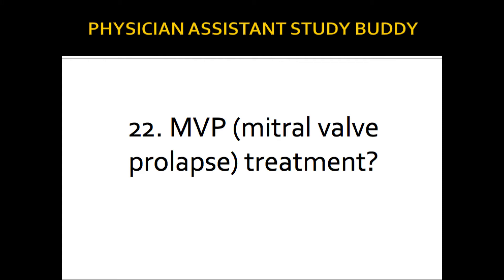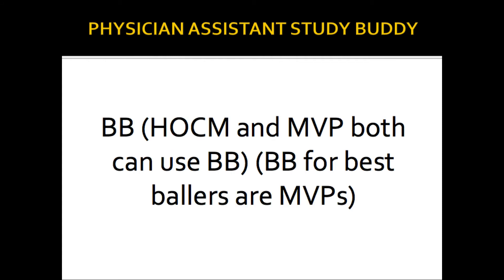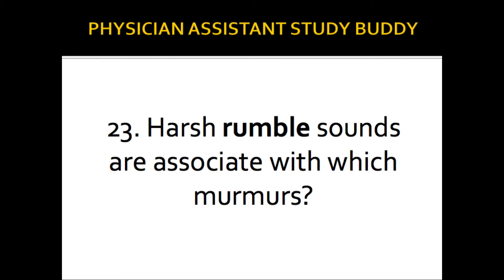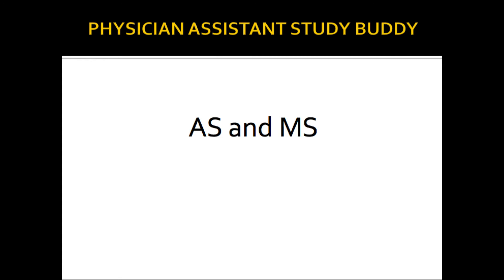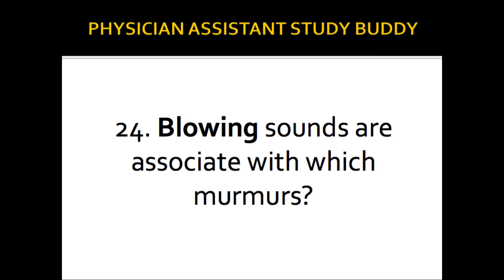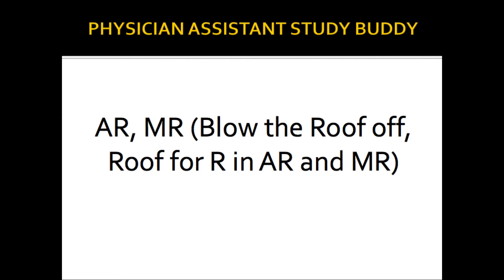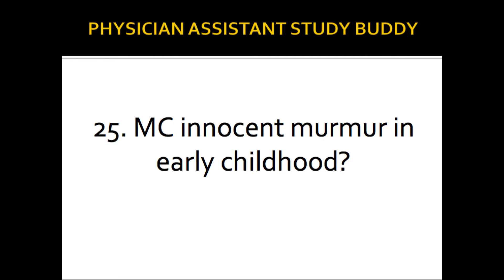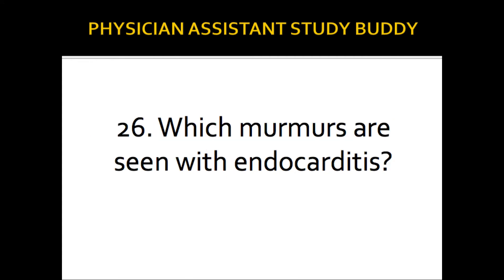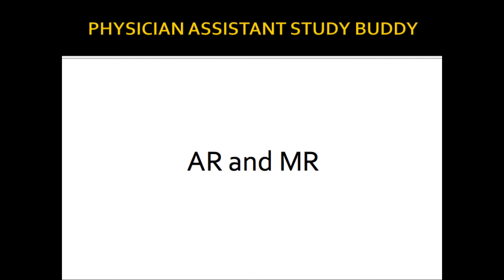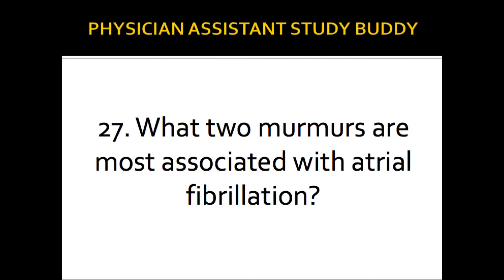Mitral valve prolapse treatment is beta blockers. HOCM and MVP both benefit from beta blockers — beta blockers for the best ballers and MVP. Harsh rumble sounds are associated with aortic stenosis and mitral stenosis. Blowing sounds are associated with AR and MR — the wind blows the strongest in the AM and blows the roof off. The most common innocent murmur in early childhood is Still's murmur.